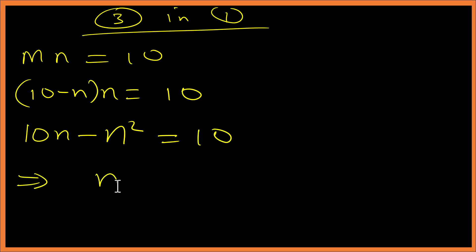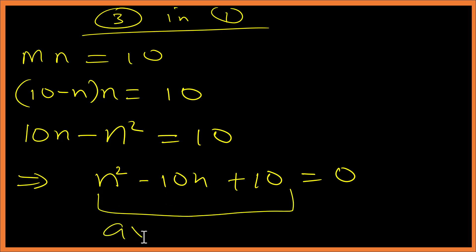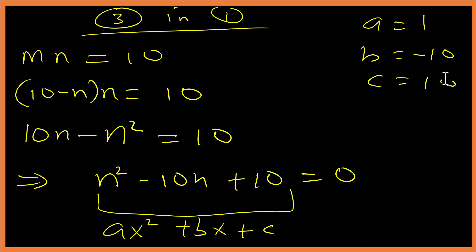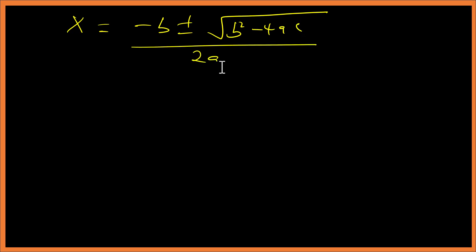Expanding gives us 10n minus n squared equals 10, which rearranges to n squared minus 10n plus 10 equals zero. This is a quadratic equation. Let's compare it with the general form an squared plus bn plus c, so we have a equals 1, b equals negative 10, c equals 10.